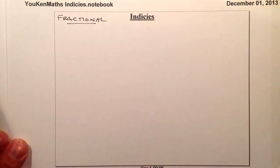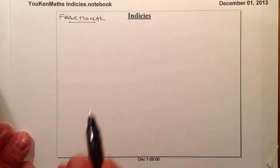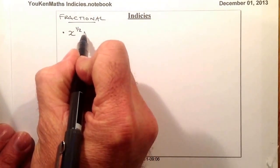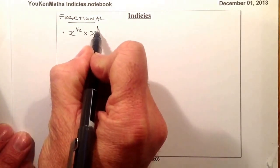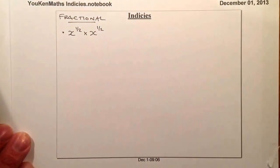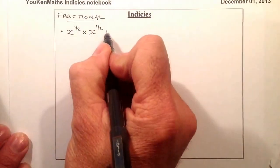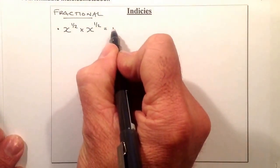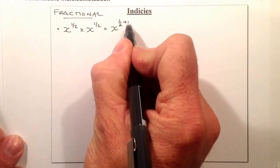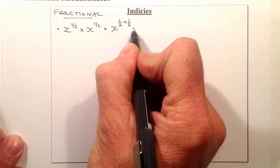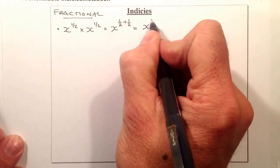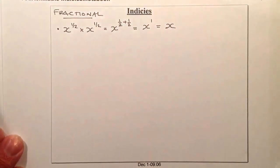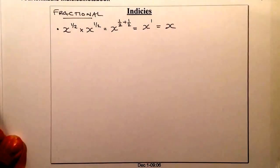Let's look at fractions as indices. Starting with an example: x to the power of a half multiplied by x to the power of a half. Using the multiplication law, we add the indices: a half plus a half equals 1. So the answer is just x — since x to the power of 1 is equal to x.